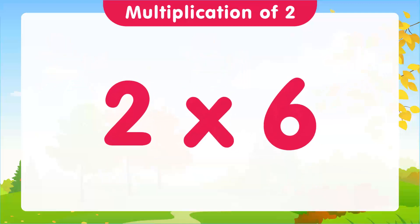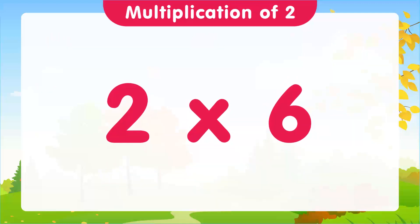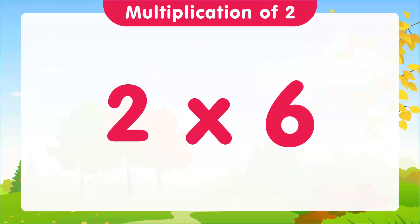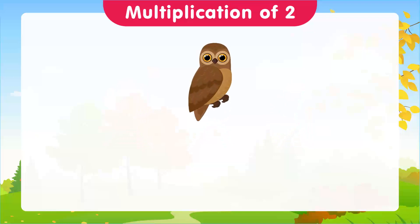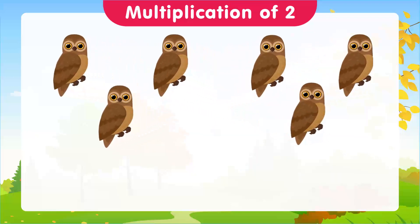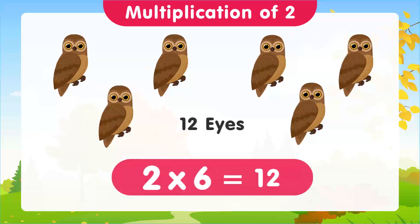Let's continue with 2 times 6. This time, we're going to use owls. Imagine we have 6 owls. How many eyes do they have between them? 12 eyes. And that's our sixth multiplication: 2 times 6 is equal to 12.